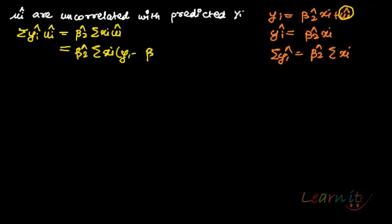So it is Y_i minus beta 2 hat X_i. Clear? Well, this would be equal to beta 2 hat...